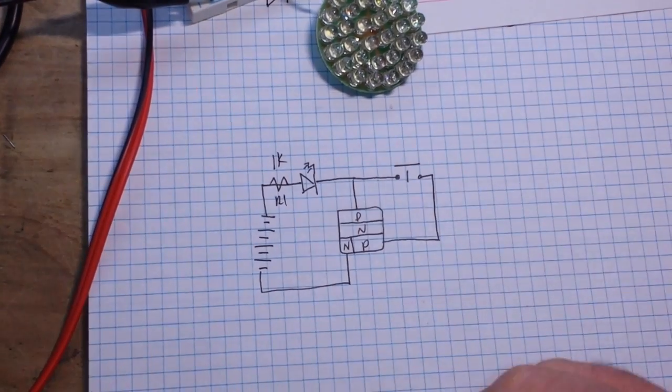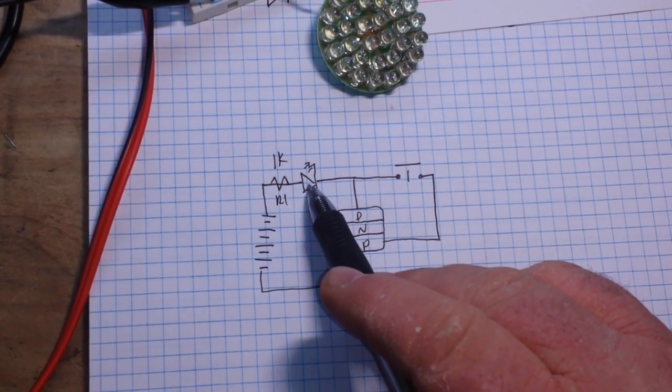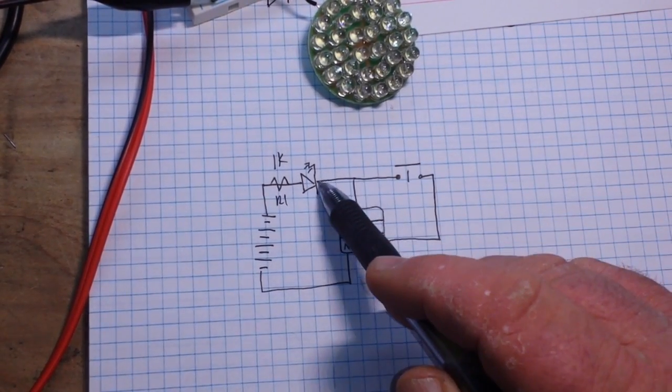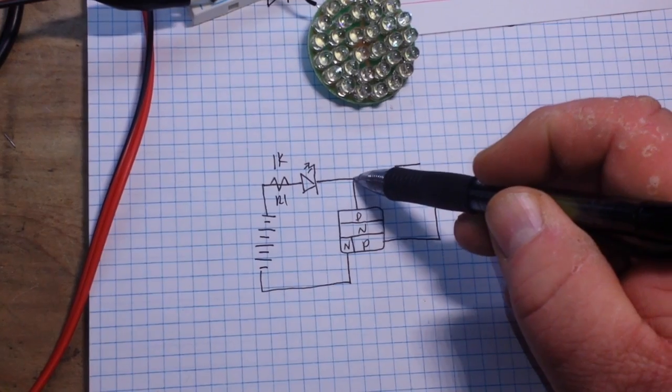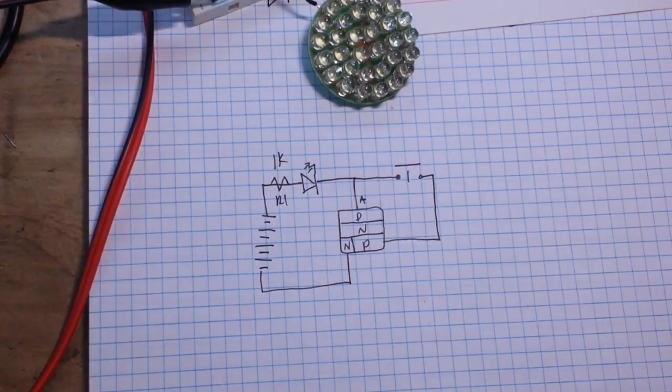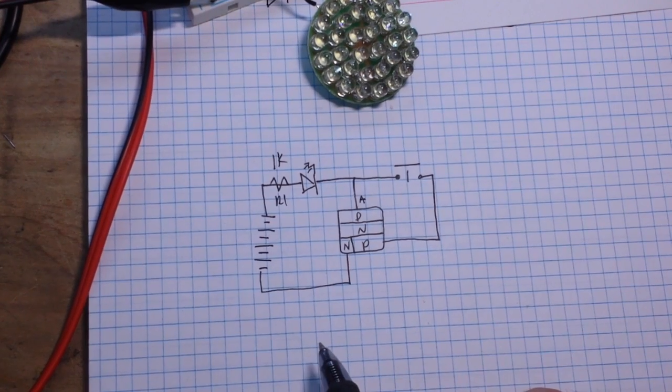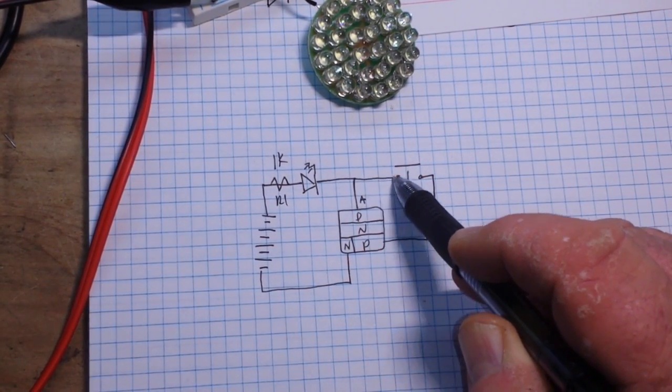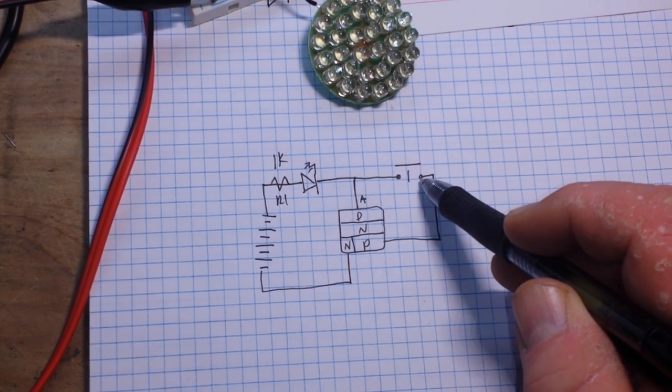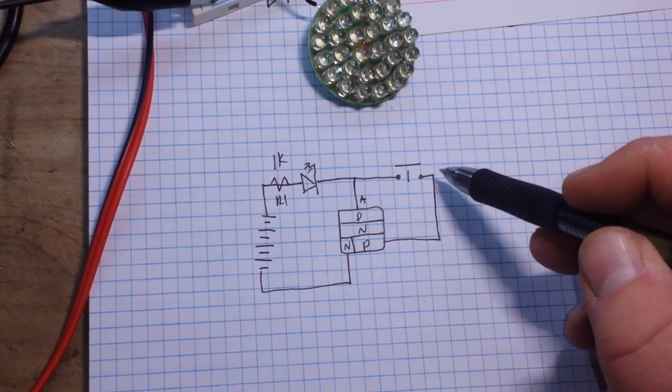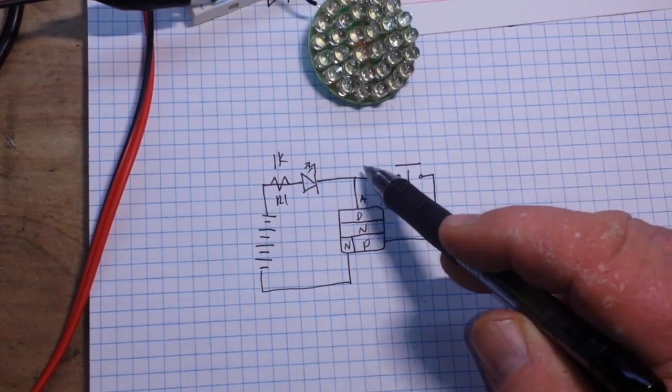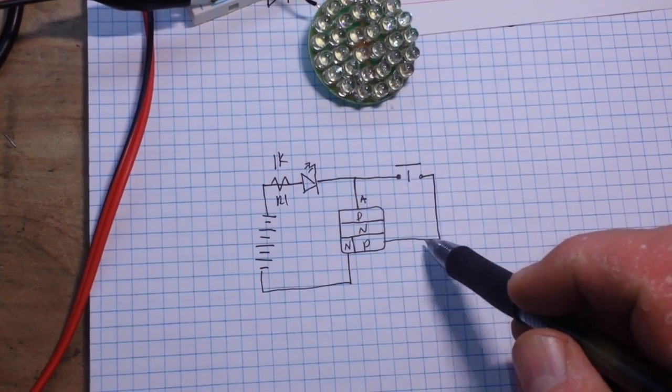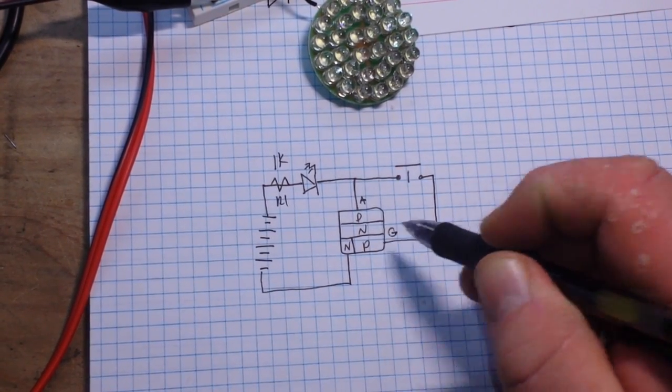one k, we'll call R1, going into the anode of this little plate full of LEDs. From the cathode we go to the A of our SCR, okay? And then out again, this is in parallel, we go to a momentary normally open switch. When we close that, we connect the A, the anode, with VCC through here, which is our gate.